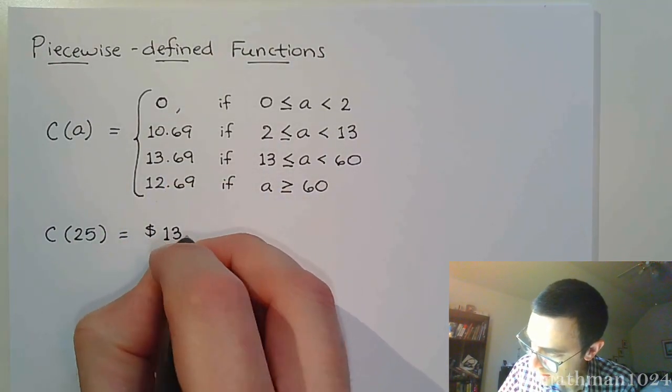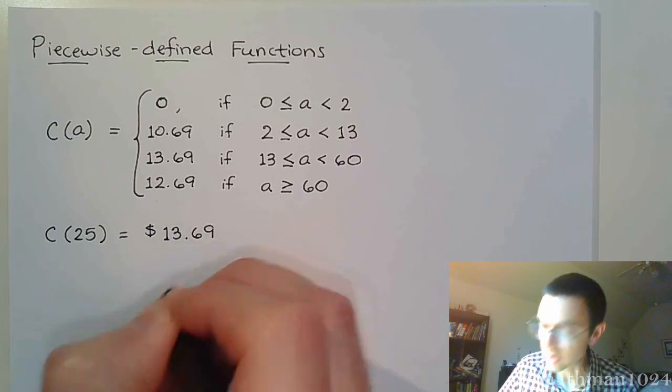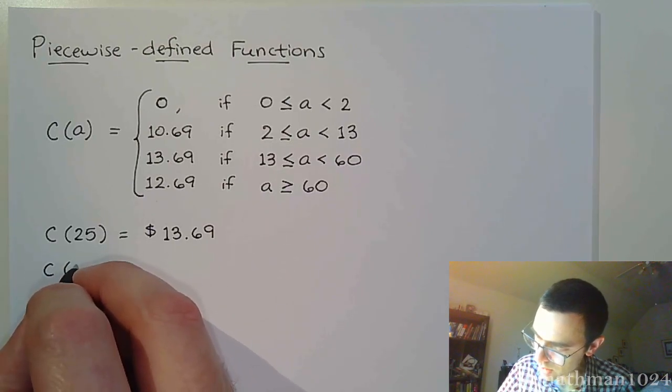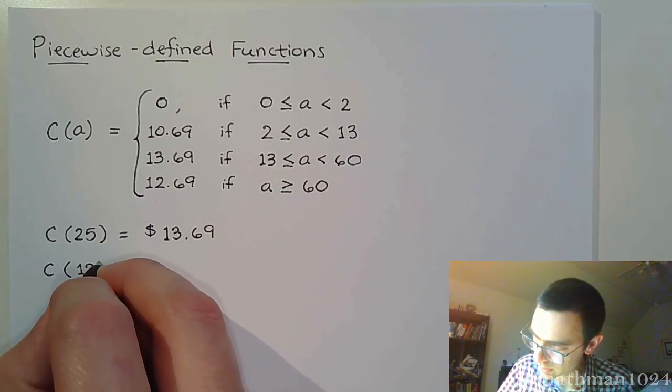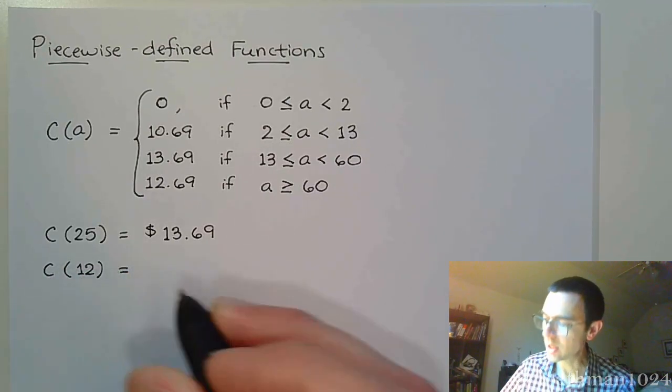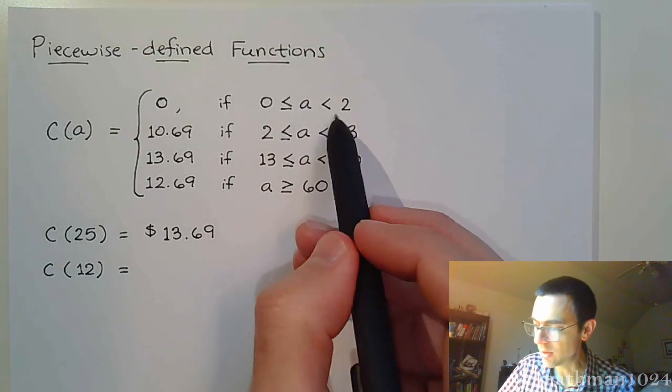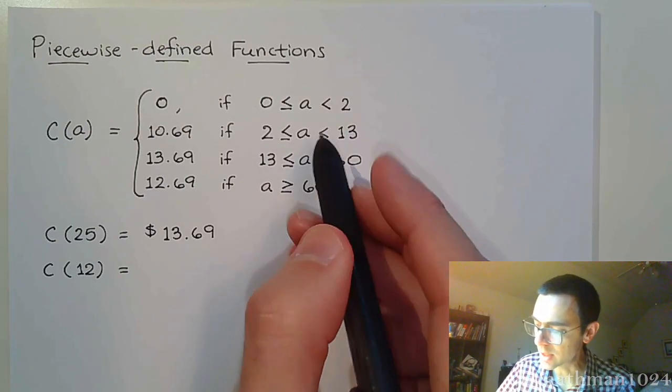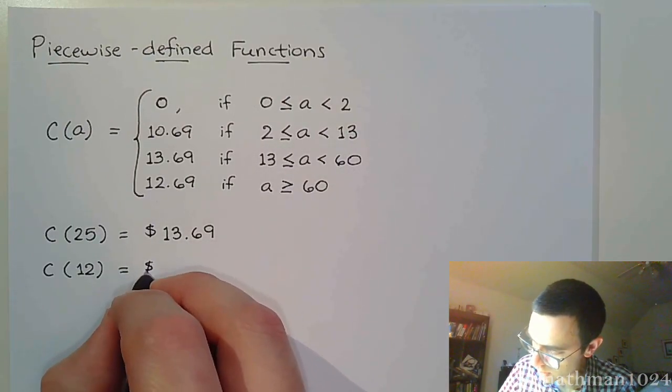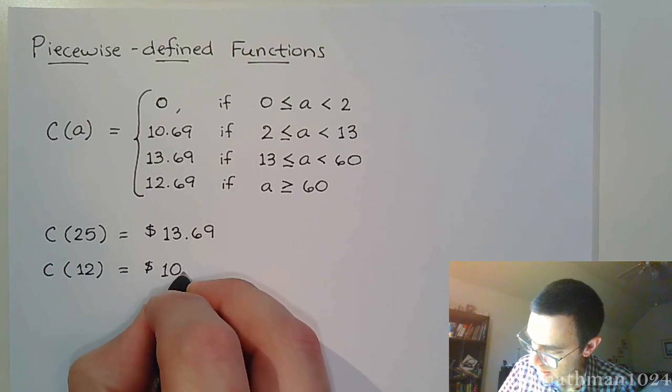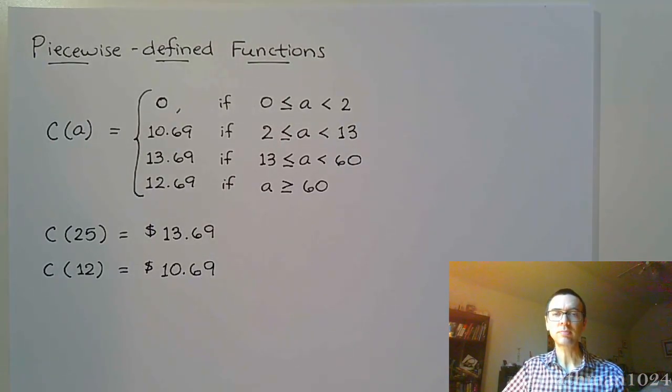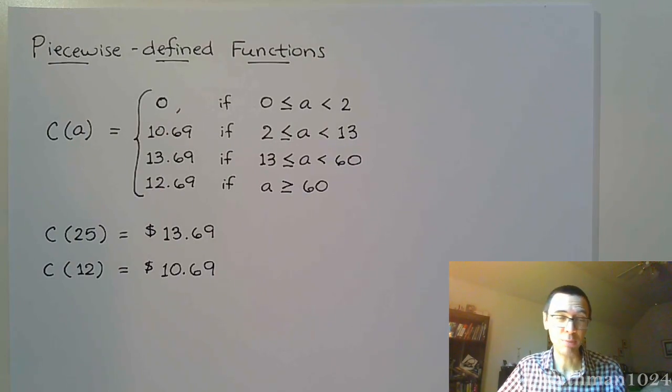If you were to say, okay, what is the cost of somebody who is 12? Well, 12 is not in this range because they're not between 0 and 2, but they are here. They are bigger than 2 and less than 13, so the cost of a 12-year-old will be $10.69.